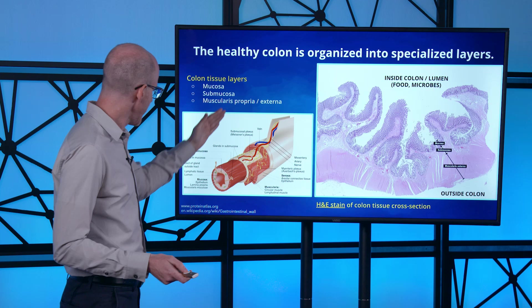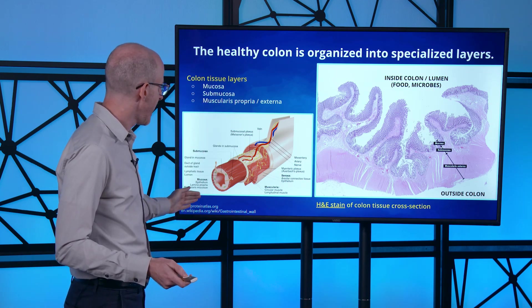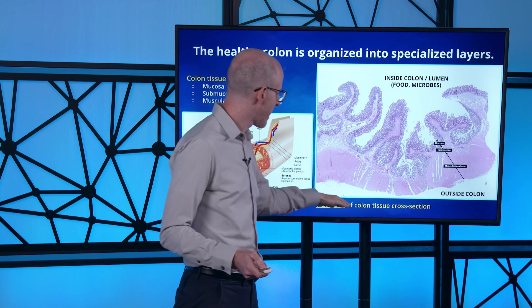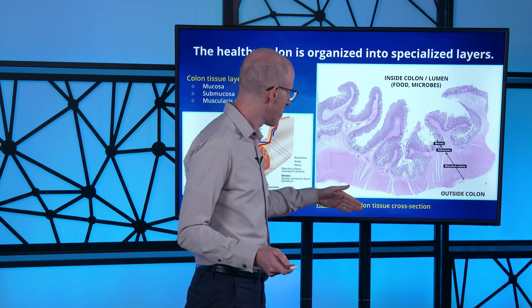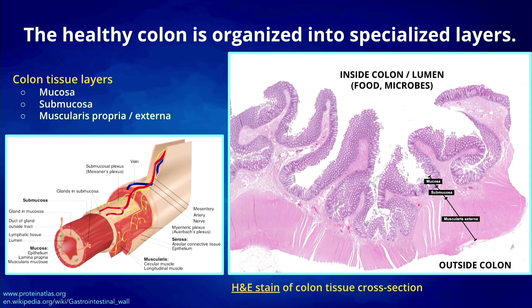If we cut a cross-section through the colon and have a pathologist do an H&E stain, we get a nice cross-section showing the inside of the colon where food and microbes live, and the outside. The H&E stain reveals all three layers: the mucosa, made up of crypts visible as circles along the surface; the submucosa below that; and the muscle layer. The H&E stain really reveals the structure and organization of the tissue.